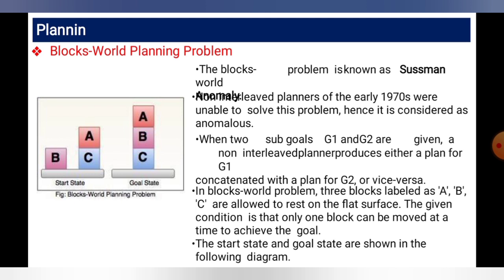The start set contains figure A, B, C and we have different goal configurations: single goals, different goals, and goals where A, B, C have all goals together. The block world planning problem involves three blocks labeled A, B, C allowed to rest on a flat surface. The condition is that only one block can be moved at a time to achieve the goal. The start state and goal state are shown in the diagram.